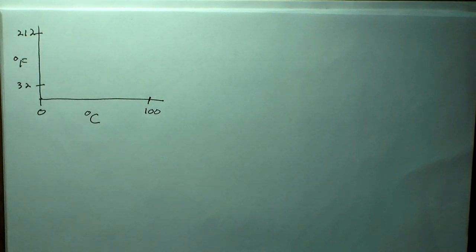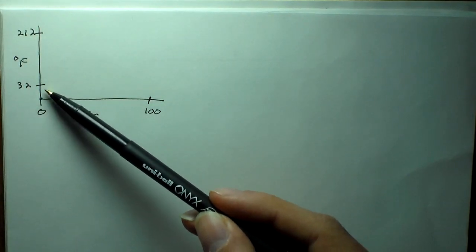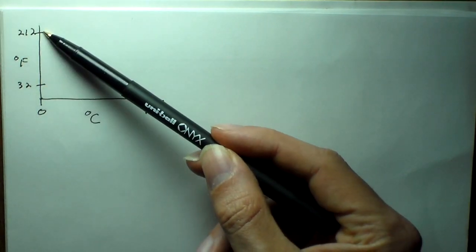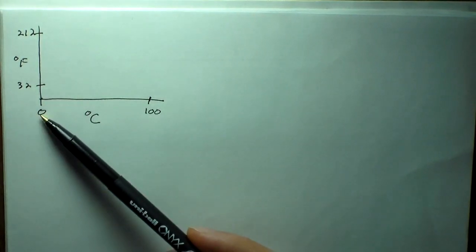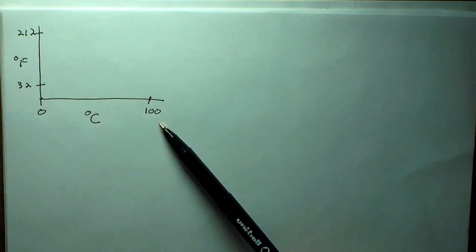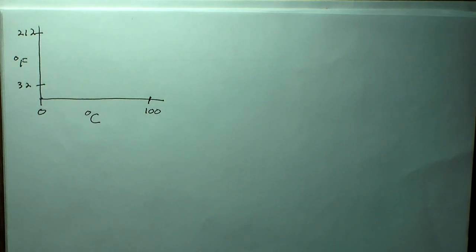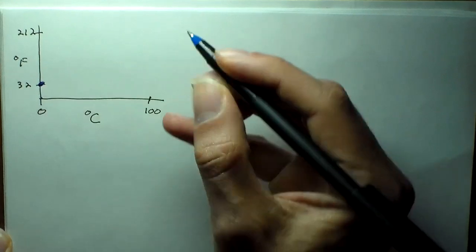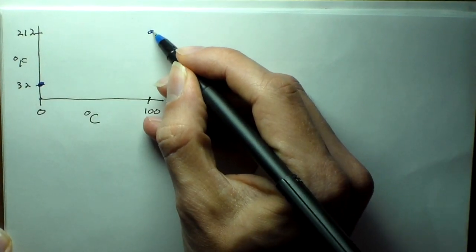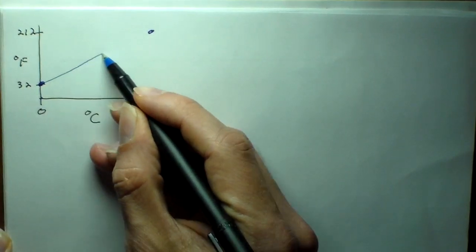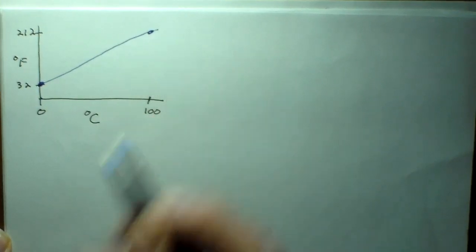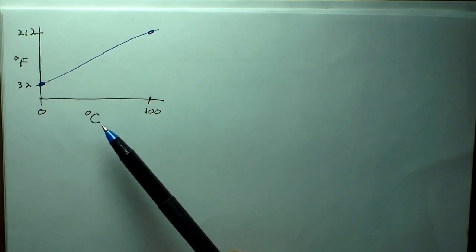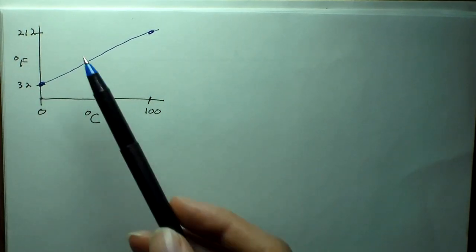What we have there is the marking off of the freezing and the boiling points of water on the Fahrenheit scale, and the freezing and boiling points of water on the Celsius scale. We can connect both of these and draw a straight line between them — that's our relation between degrees Fahrenheit and degrees Celsius.